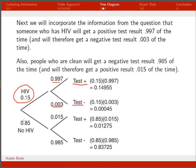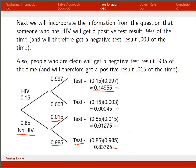If we move along the no-HIV branch, we're told we get a negative result 0.985 of the time, so the remaining 0.015 must be for a positive test. To find the final probabilities we multiply the first branch times the second branch. For example, testing positive with HIV is 0.15 × 0.997, and testing negative with HIV is 0.15 × 0.003. All four final probabilities should add up to 1.